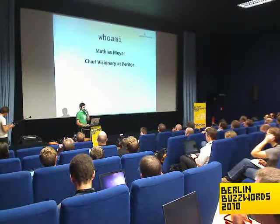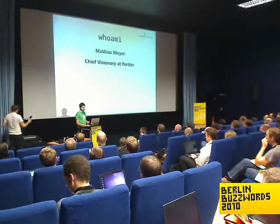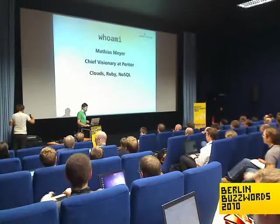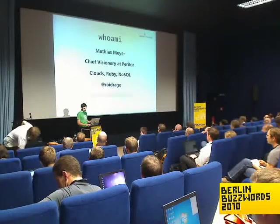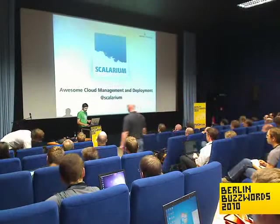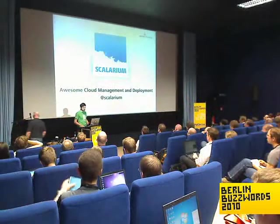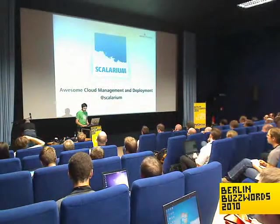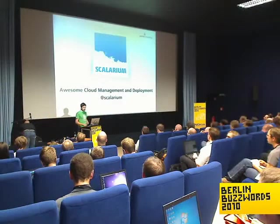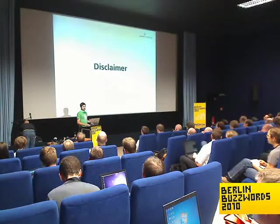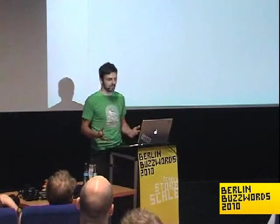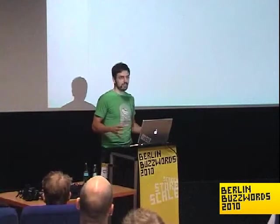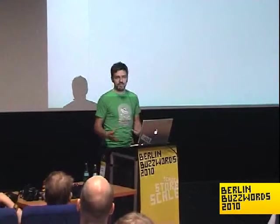Who am I? My name is Matthias Maier. I carry the fancy title of chief visionary at a company called Peritor here in Berlin. I play a lot with clouds, Amazon's EC2, Ruby, and NoSQL databases. I tweet and write a lot of code. What I do for a living is build a tool called Scalarium — an awesome cloud management and deployment platform. I'm just a user; I'm not here to talk about any of the tools specifically. I just like to play with them and work with them.